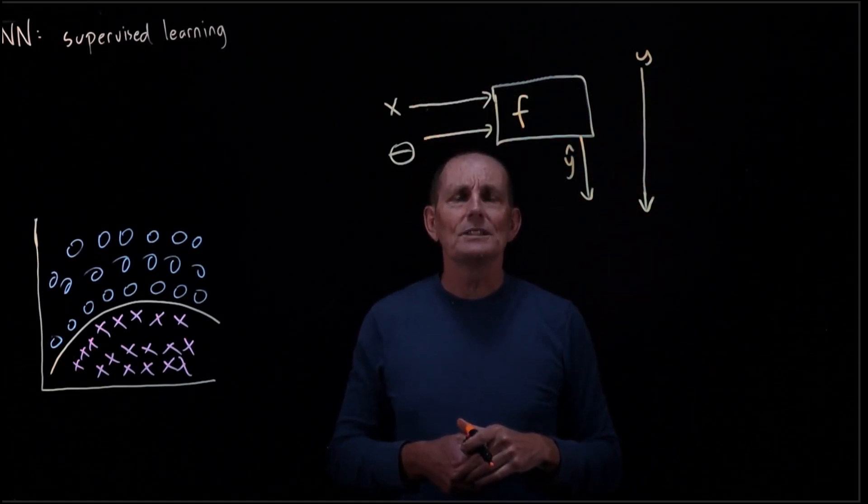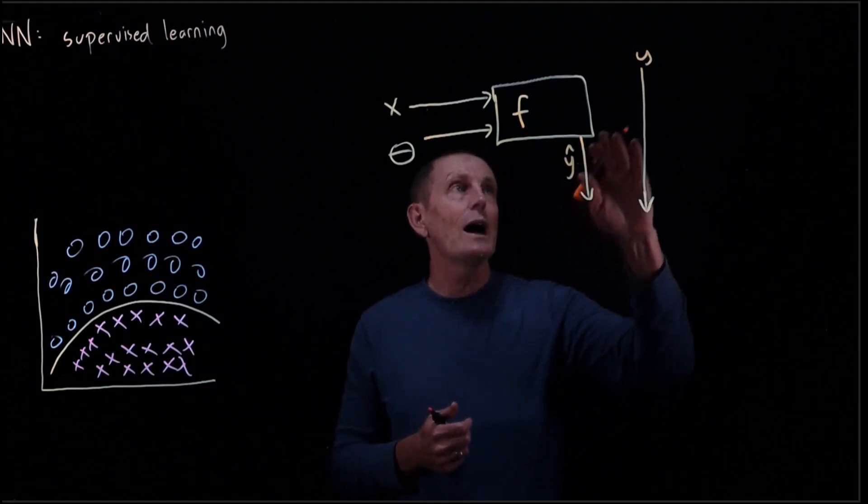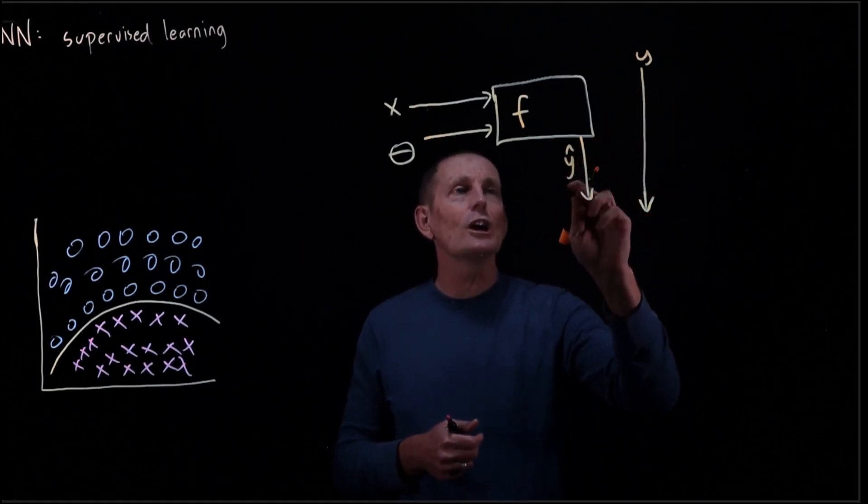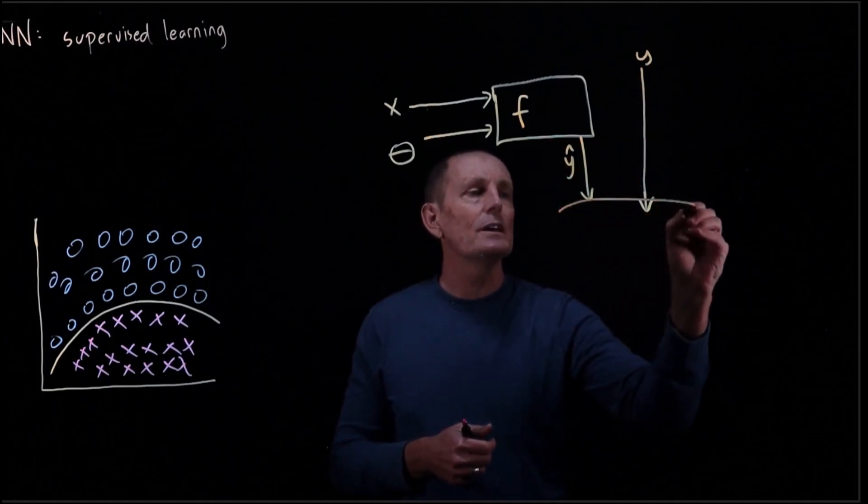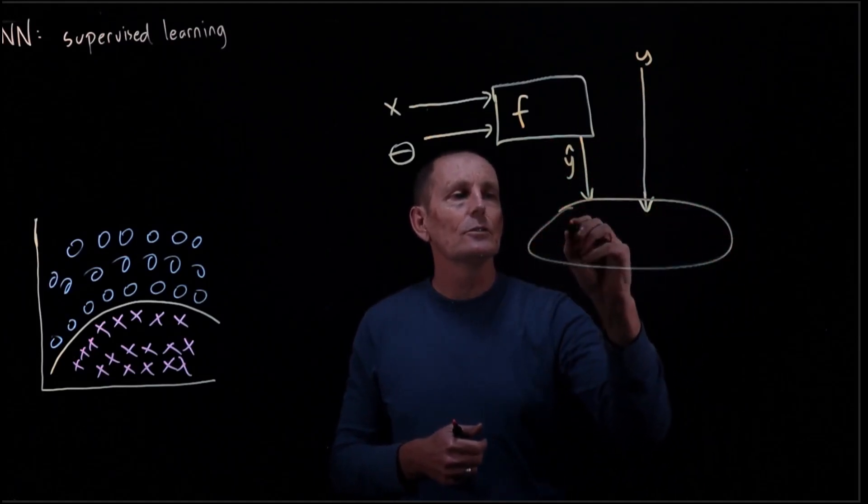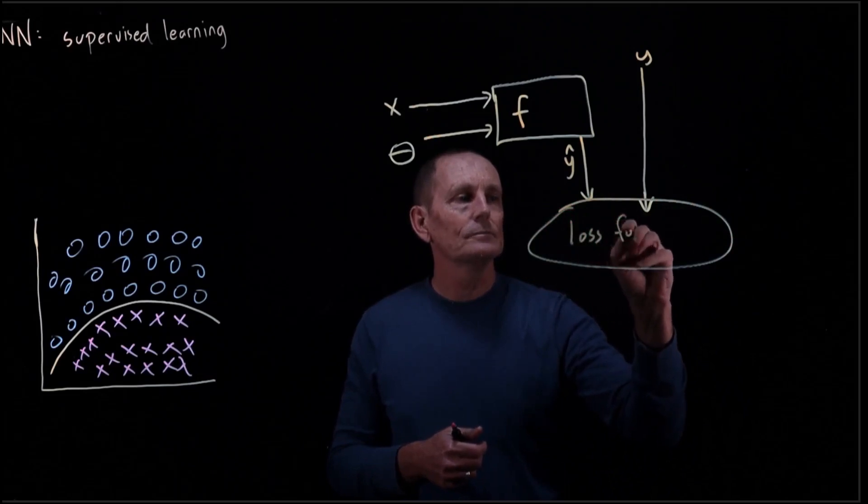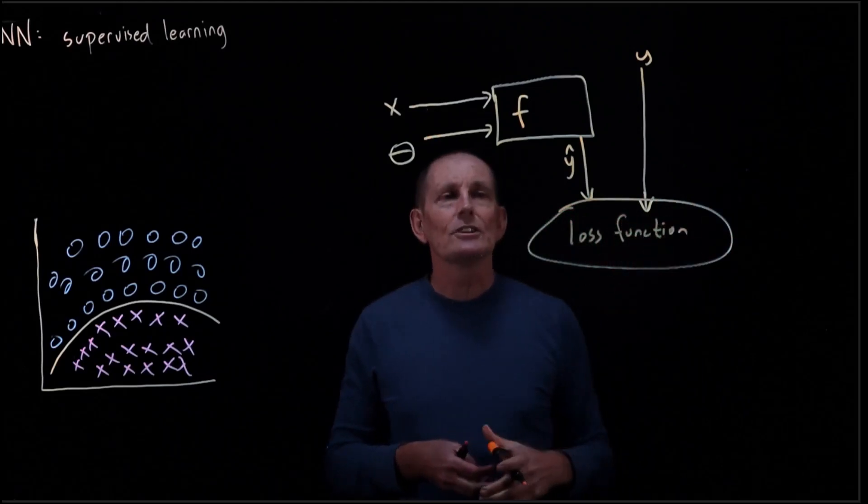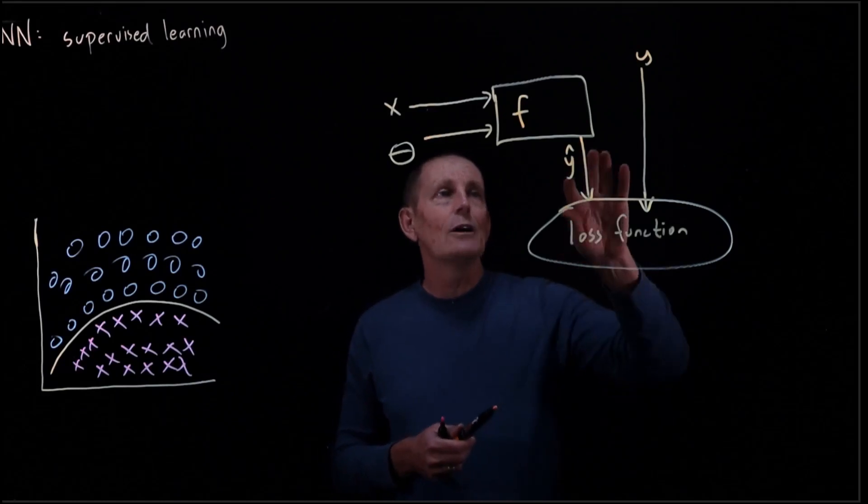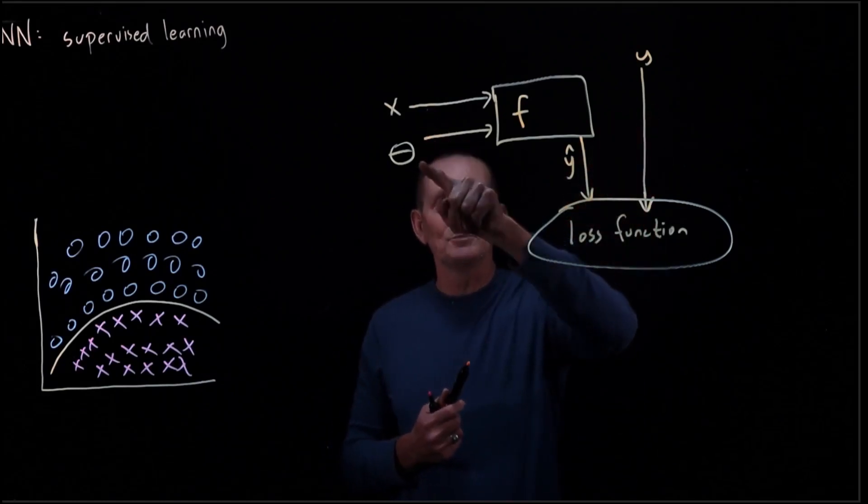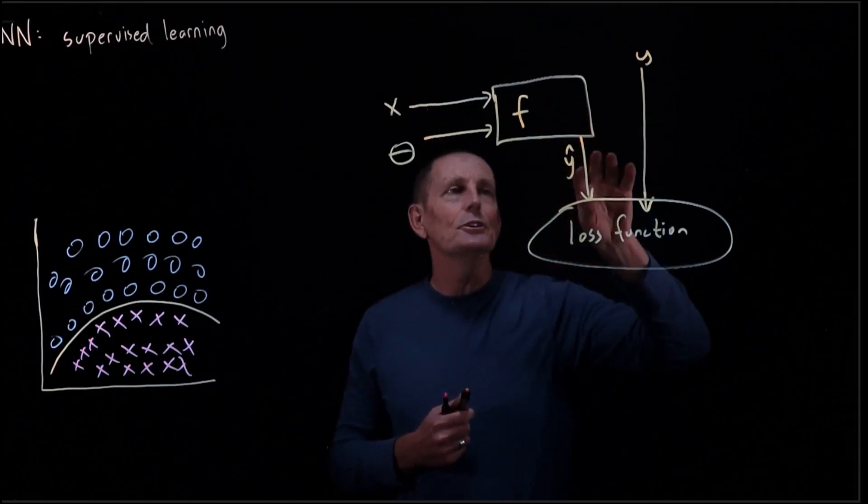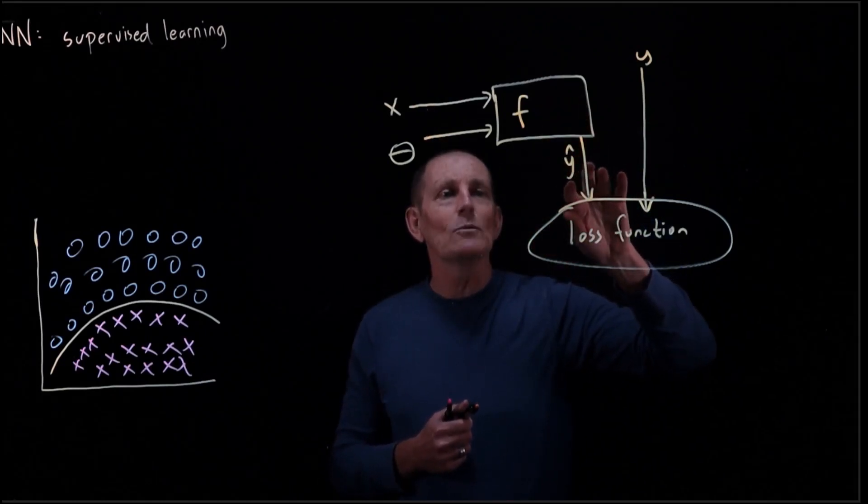And then what we do is we say, how good is this Y compared to this Y-hat? How good a job did this function do in approximating Y? So I'm going to run this through a loss function. A loss function is going to basically measure how good is this. How good, given this X for this particular theta, did F do at approximating Y?